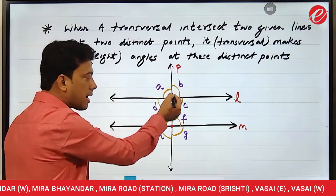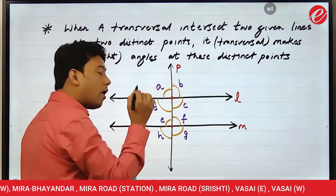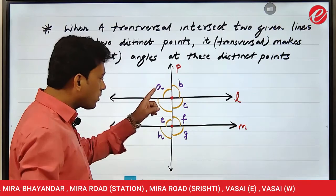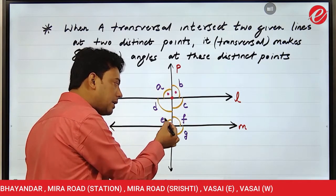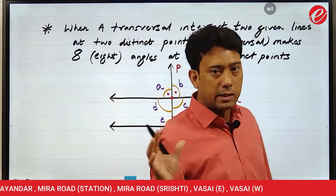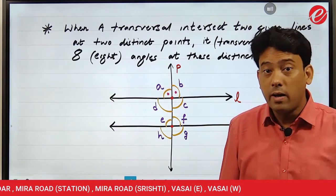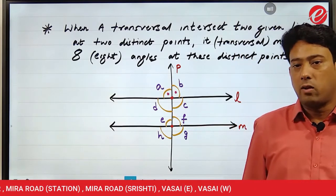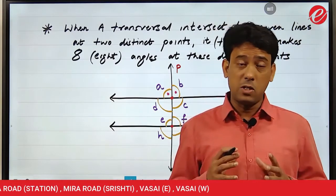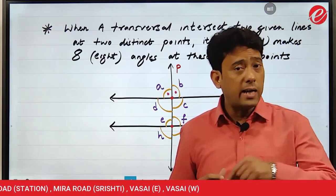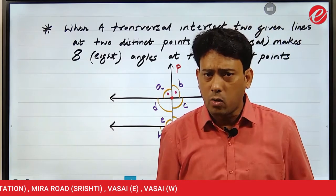Here is the transversal, and these are the two distinct points. At these two distinct points, a total of eight angles are formed — named A, B, C, D, E, F, G, H. So we have given names to these eight angles. When a transversal intersects two given lines, it forms a total of eight angles. There are four relations, and in today's lecture we will study those four relations one by one.